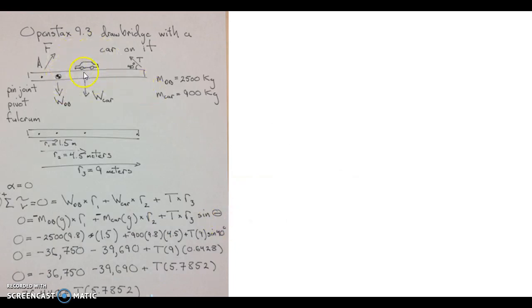This is my diagram to summarize what's going on. There's the weight of the car. There's the weight of the drawbridge. There's the tension applied by the cable, and there's the reaction force provided by the hinge joint.